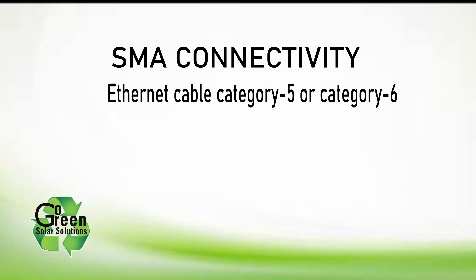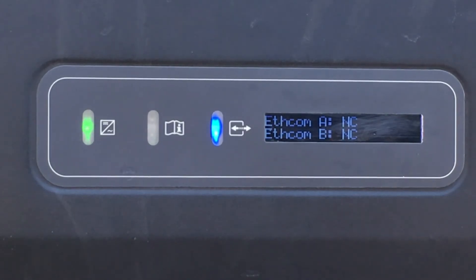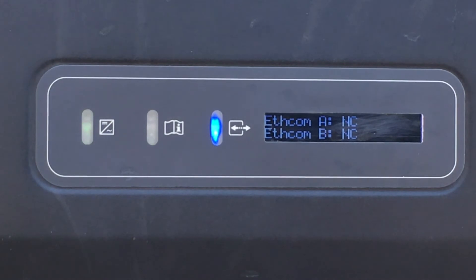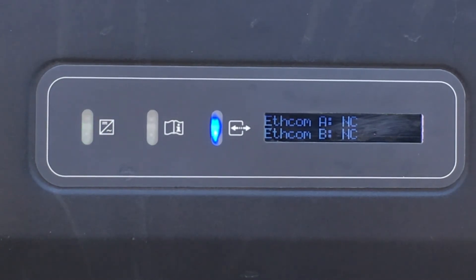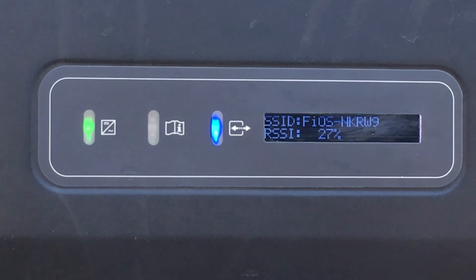One of the new features of the SMA inverter is that it can be connected by Ethernet Category 5 or 6 cable or Wi-Fi. In this screen we can see the status of the Ethernet connection — it's NC, which means not connected. The next screen shows the Wi-Fi signal's RSSI strength.